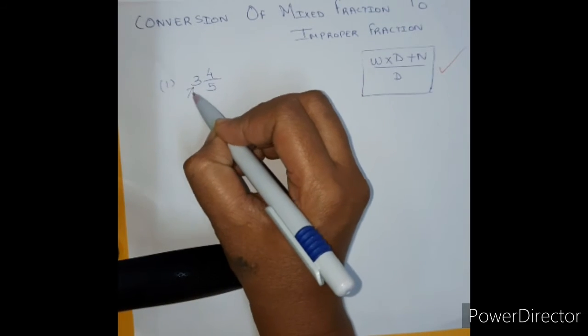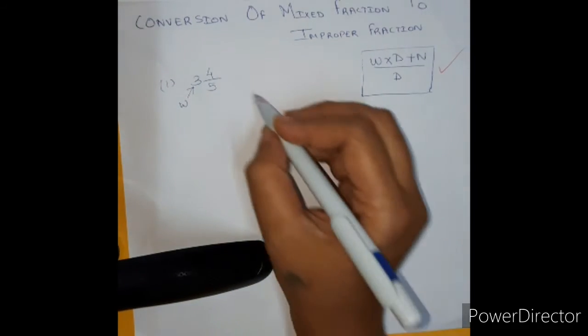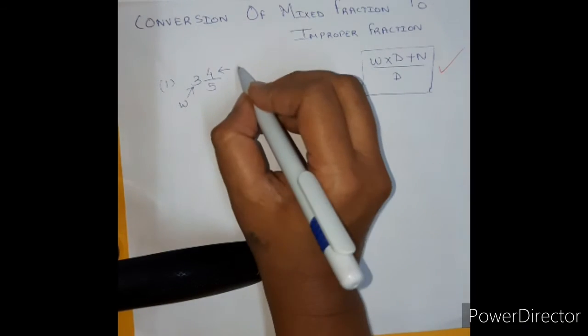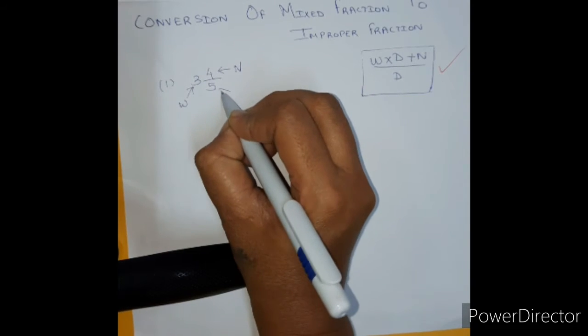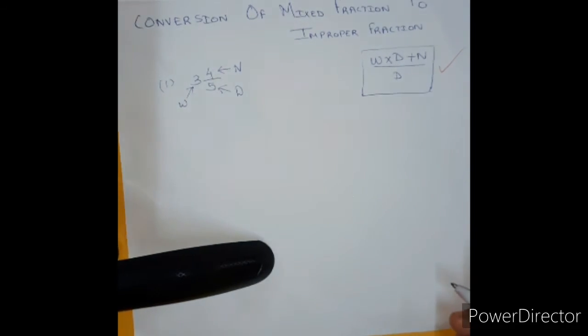So this part 3 is the whole number, correct. Can you tell me what is this called? 4, numerator, very good. And this part will be called as the denominator.